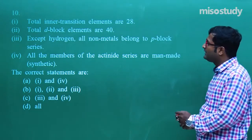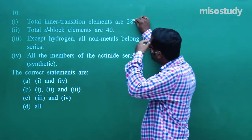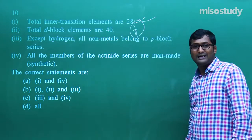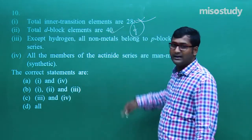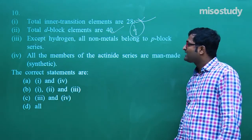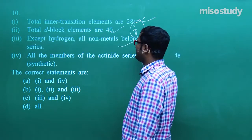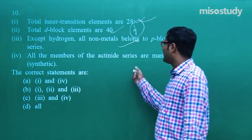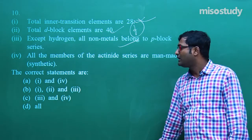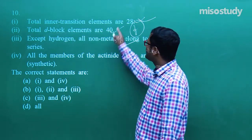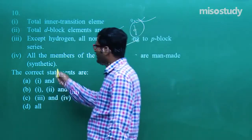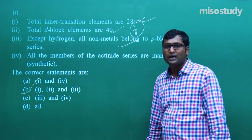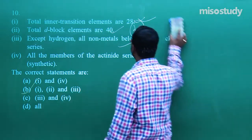Question number ten: the total inner transition elements are 28 — that is 14 (lanthanides) + 14 (actinoids). Total d-block elements are 40 (3d, 4d, 5d, 6d). Except hydrogen, all non-metals belong to the p-block — this is correct. However, not all actinoid members are man-made; only a few are. So statements 1, 2, and 3 are correct. For question number ten, B is the correct option.